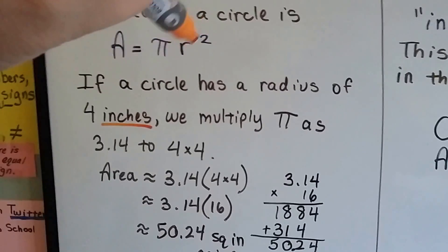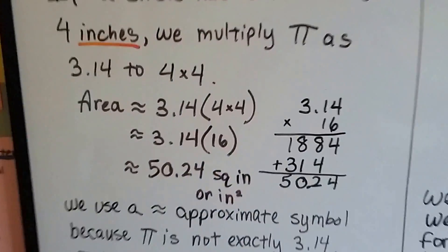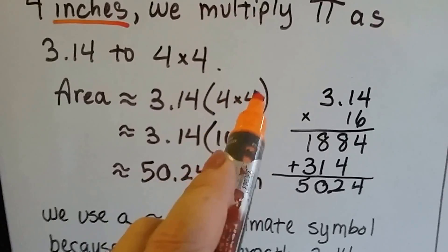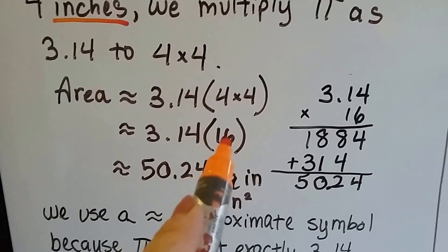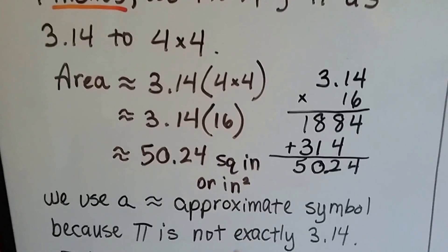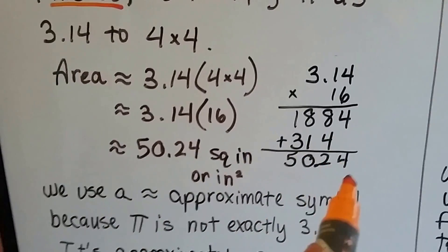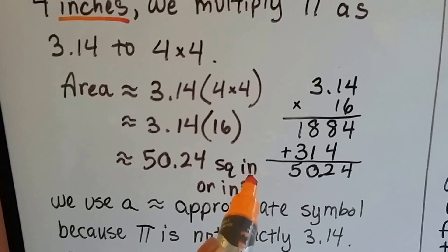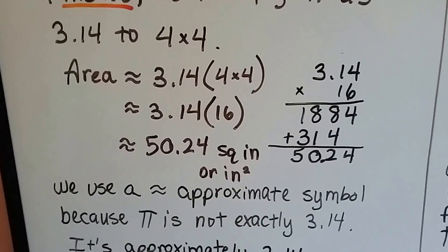See? Because the radius is squared, 4 times 4. So the area is approximately 3.14 times 4 times 4, or 3.14 times 16. See? 3.14 times 16 is 50.24. And it's in square inches because it was inches. It's square units.